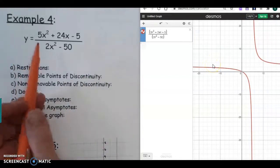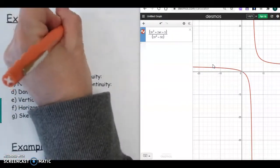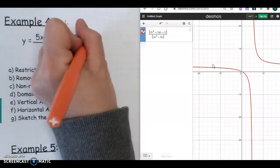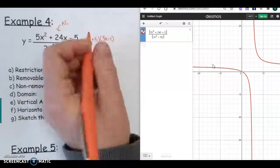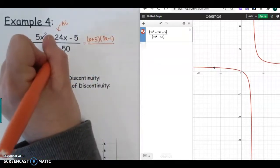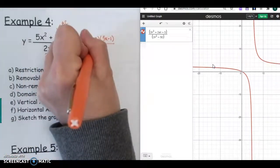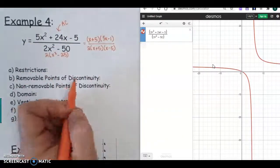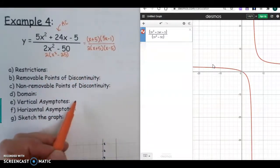So the first thing we want to do is we want to factor. I see that this can be AC. So I'm just going to write AC, and for time purposes, I'm just going to go ahead and factor that out for you. So it's going to be (X + 5)(5X - 1) once you do AC. Here I see that there's a GCF, so I'm going to factor that out. That leaves me with a difference of squares. So we're going to have 2(X + 5)(X - 5). So now everything's in factored form.